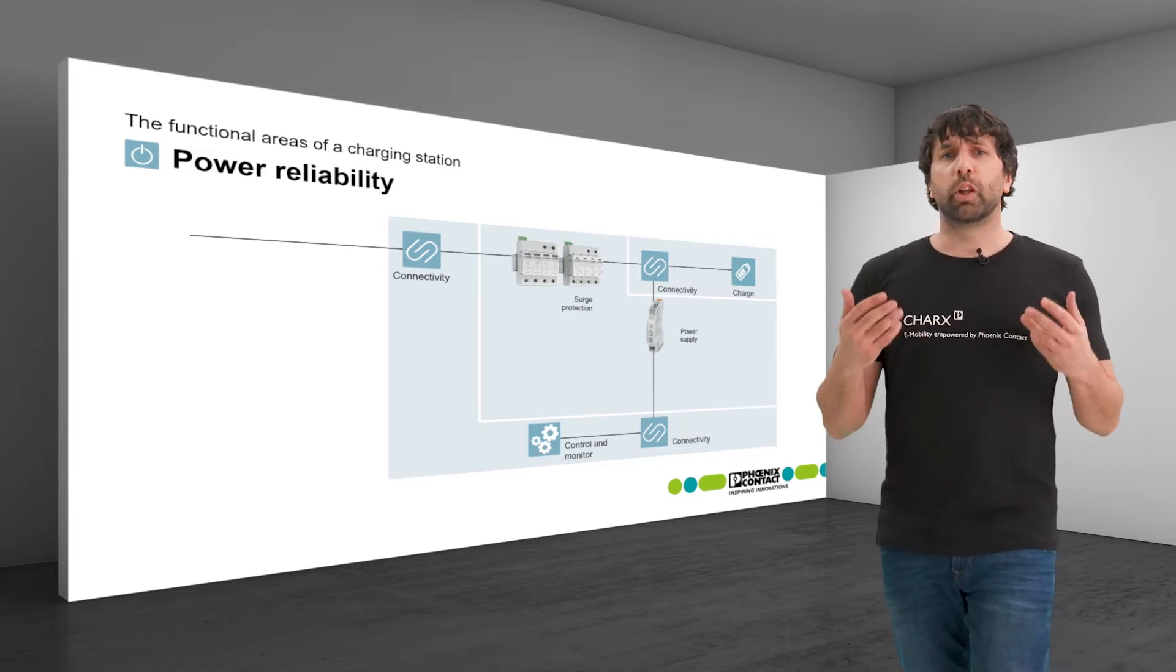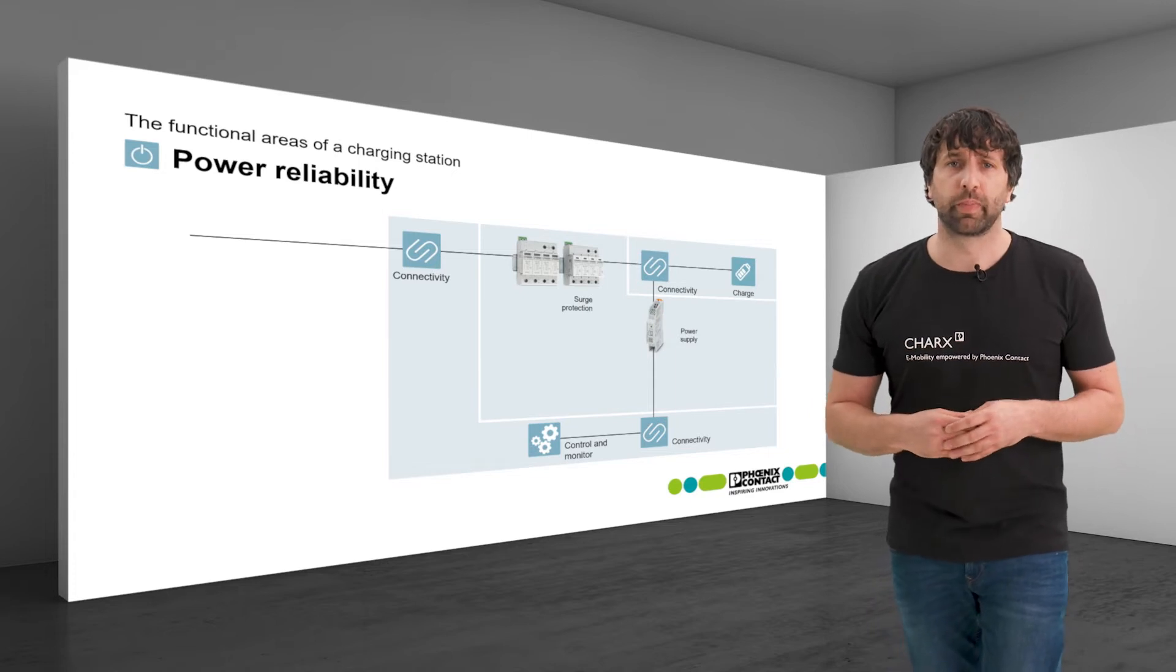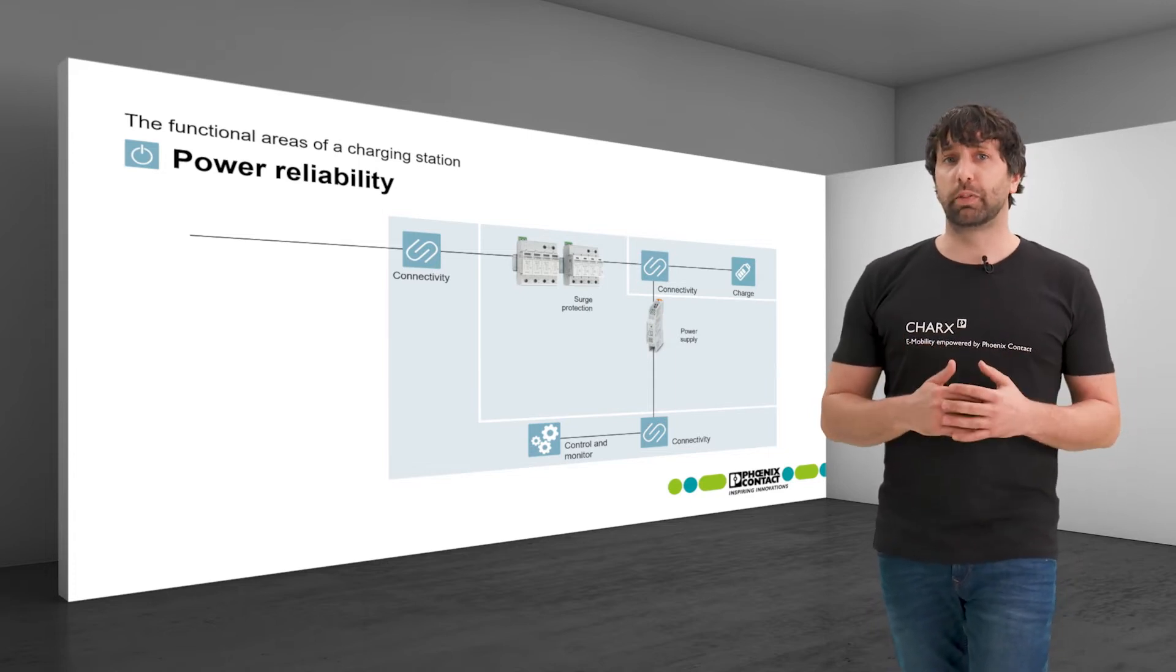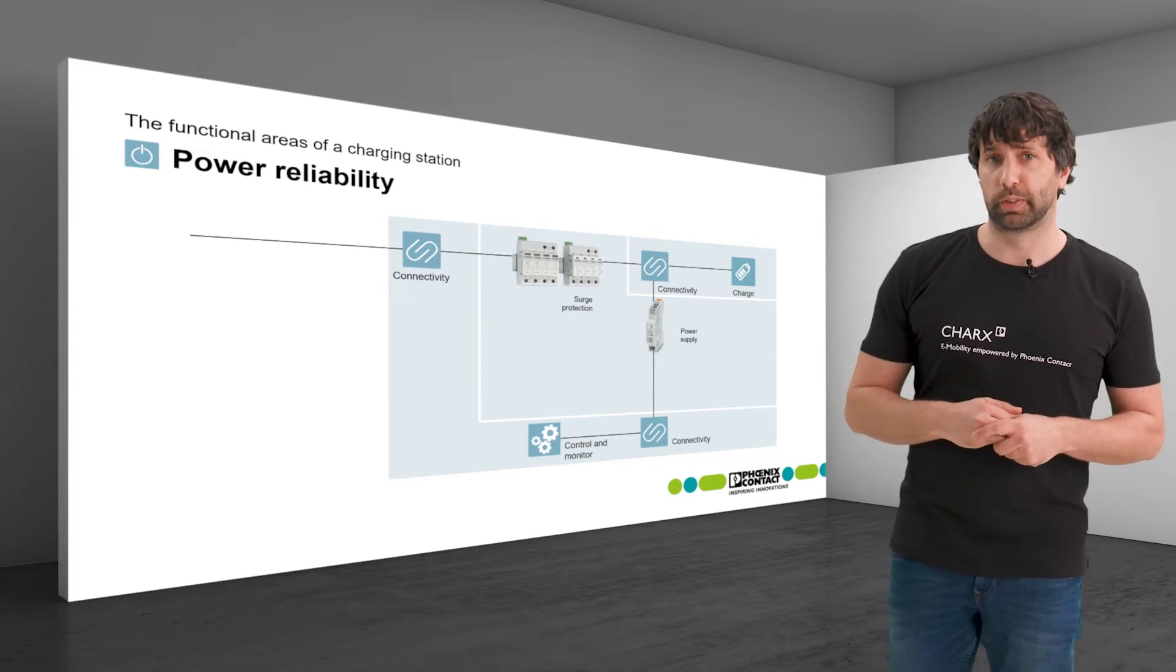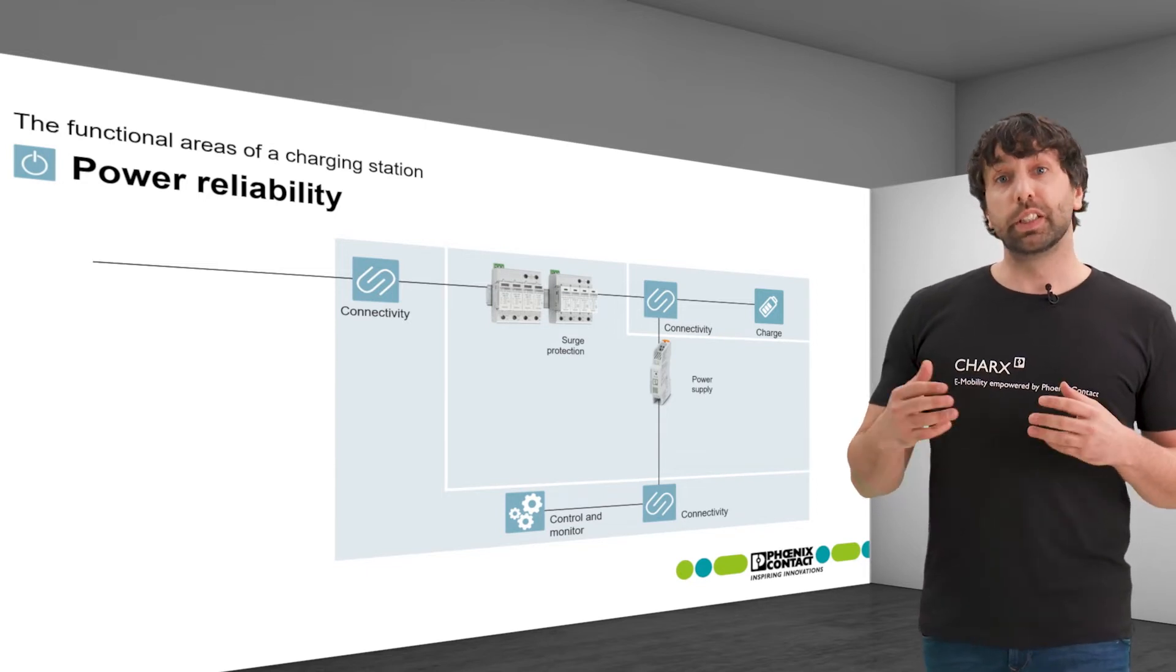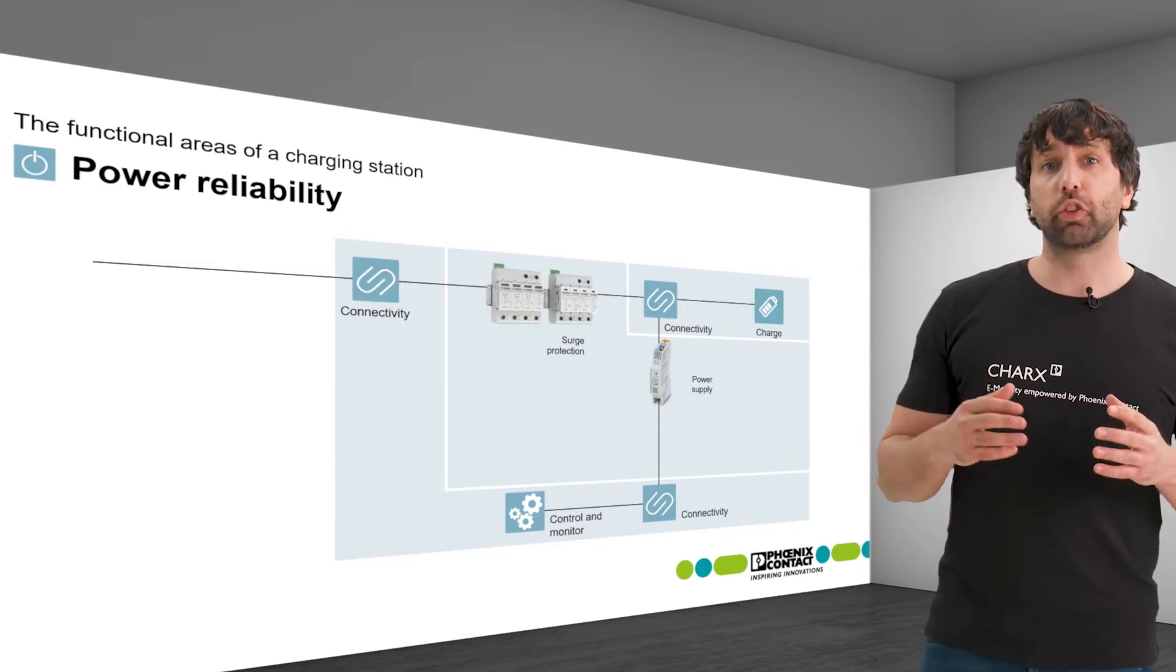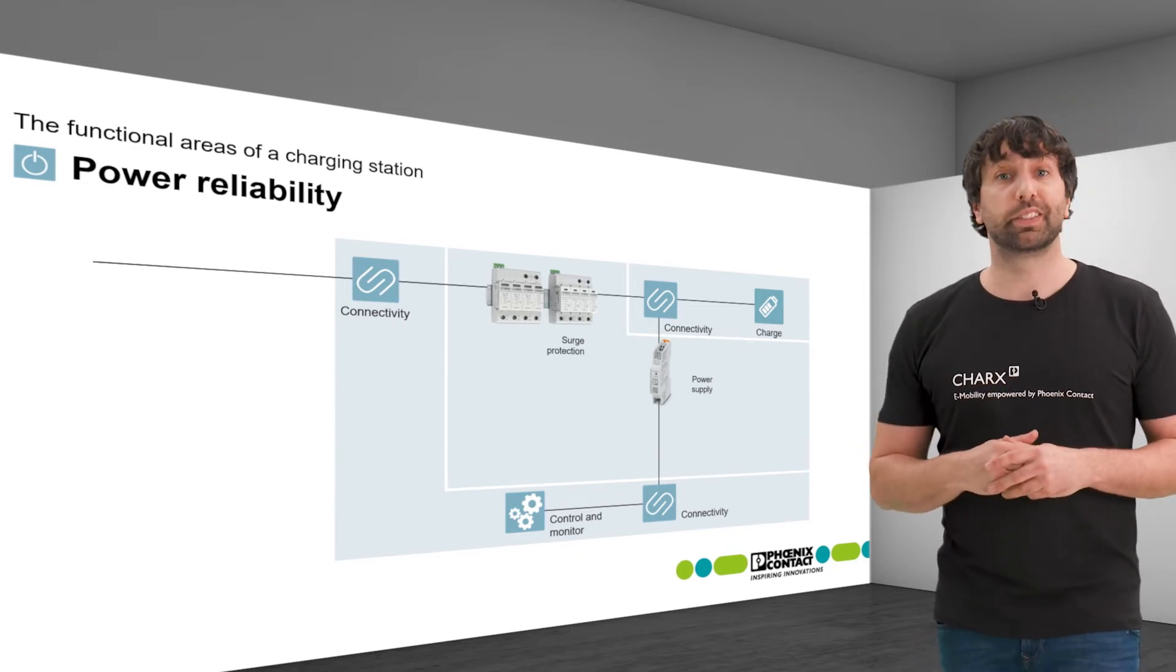They were developed and tested in accordance with the International Charging Station standard. Functional scope and price level are designed to meet the requirements of the charging infrastructure. Additional redundancy or UPS systems are not necessary since the charging controller has an energy buffer to store relevant data if the primary power supply is interrupted.